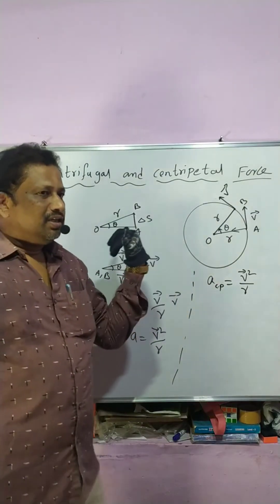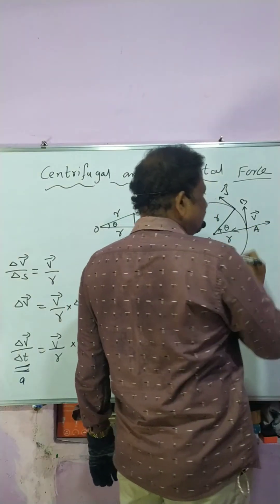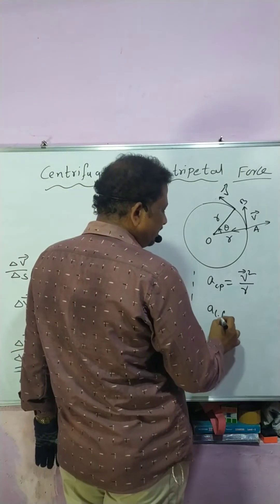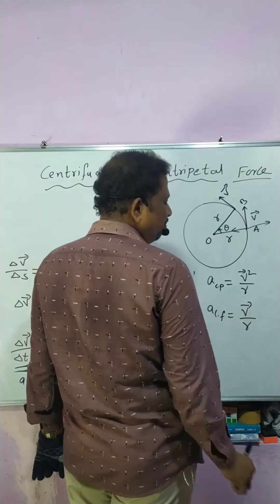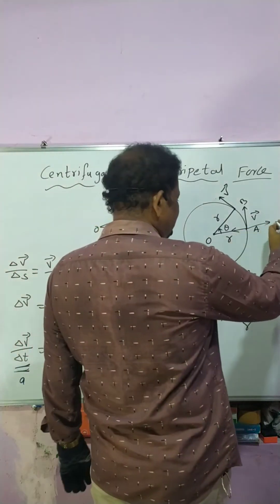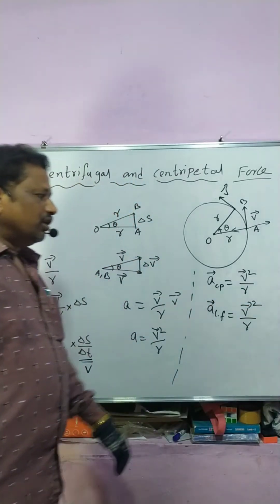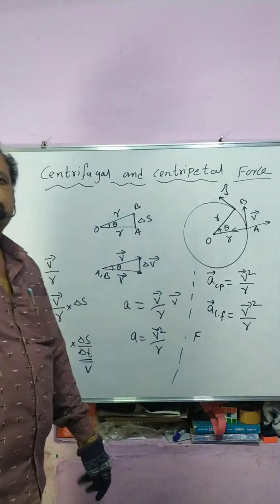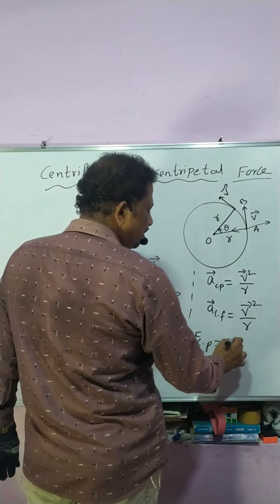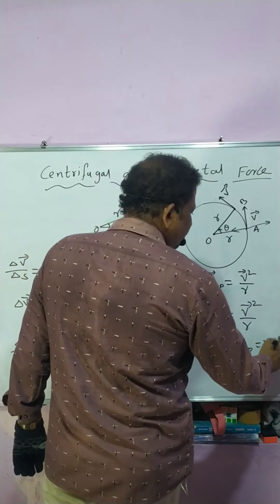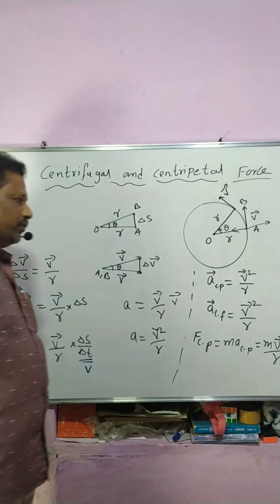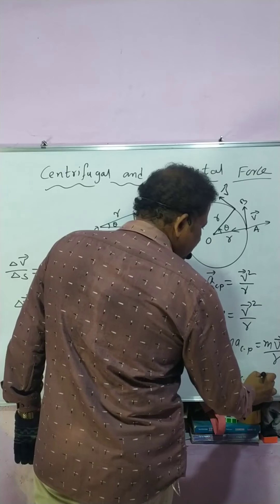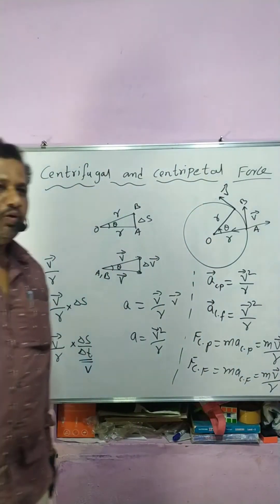The centripetal acceleration acts towards the centre, and centrifugal acceleration acts equal and opposite — only then can the body revolve in a circular or elliptical orbit. Centrifugal acceleration is the same magnitude, V² / R, but in the opposite direction. So centripetal force equals M × centripetal acceleration = MV² / R, and centrifugal force is also MV² / R but in the opposite direction.